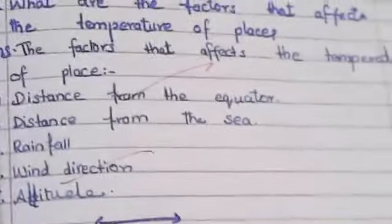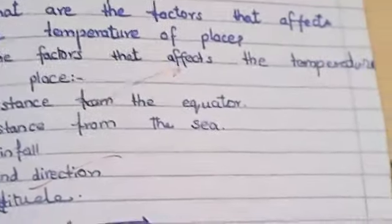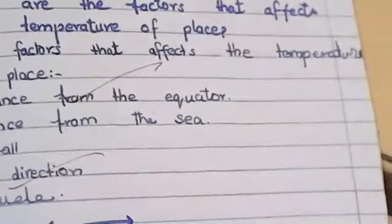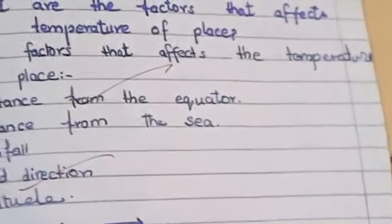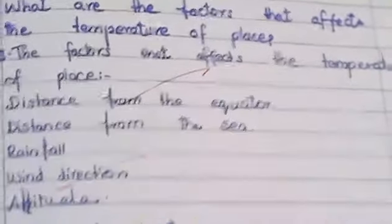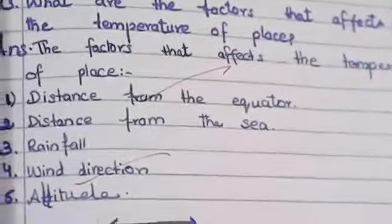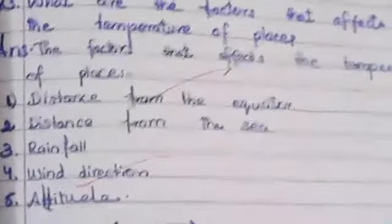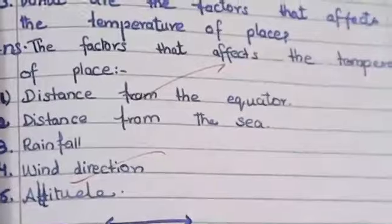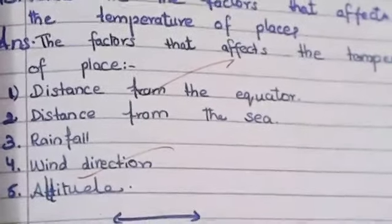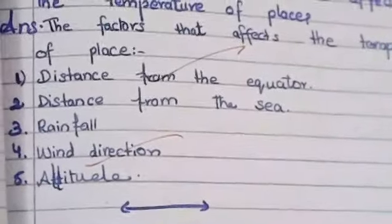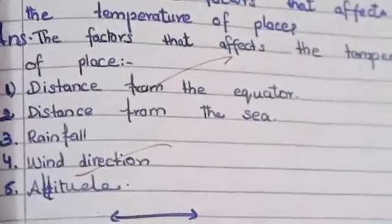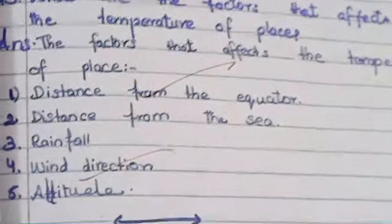The answer has five points. The factors that affect the temperature of a place are: number one, distance from the equator; number two, distance from the sea; number three, rainfall; number four, wind direction.